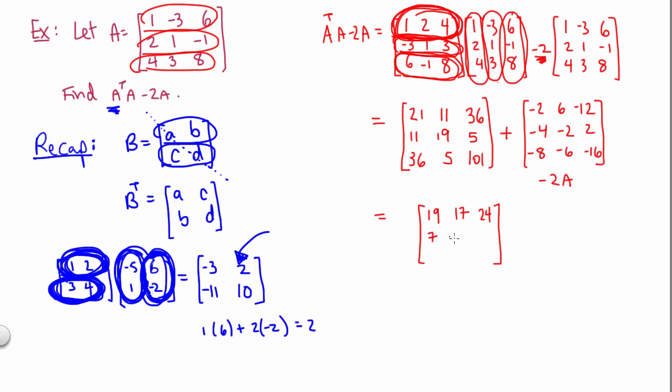And filling in the rest of the matrix correspondingly, we'll have 7, 17, and 7. And then finally for the bottom row, 28, negative 1, and 85. And there we have our final answer.